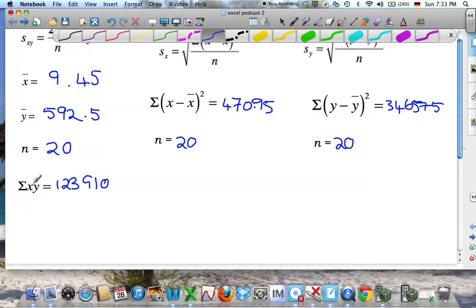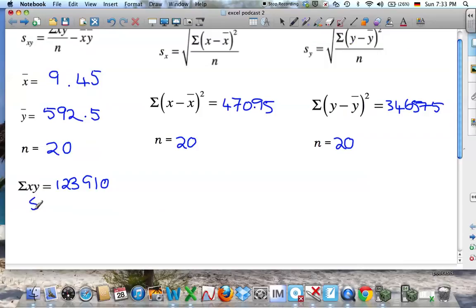So if we go to the first one, it says take the sum of x and y, so that was this number here, 123,910, divide that by your number of terms, so 20, minus your mean of x.